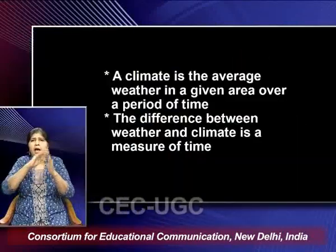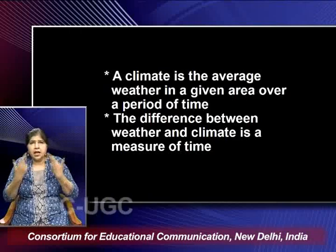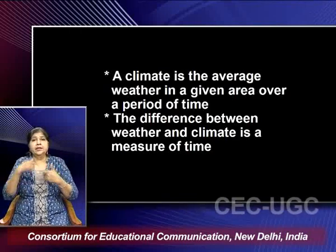Now, after this conceptual dive into the aspects as to what defines climate change, we now understand the difference between weather and climate. Weather reflects short term conditions of the atmosphere, going by the definitions from geographical textbooks. Whereas climate, from the geographical perspective, is the average daily weather for an extended period of time at a certain location. A climate is the average weather in a given area over a period of time. The difference between weather and climate, therefore, is a measure of time.